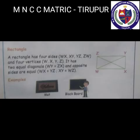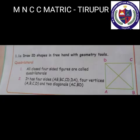A rectangle has four sides WX, XY, YZ, ZW, and four vertices W, X, Y, Z. It has two equal diagonals: WY = ZX, and opposite sides are equal: WX = YZ and XY = WZ. Examples: mat and blackboard. Next: draw 2D shapes freehand with geometry tools.